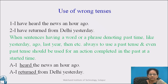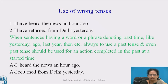We all know that there are three tense forms: simple present, simple past, and simple future. While using these tenses, we commit some mistakes by using wrong tenses. See the examples: 'I have heard the news an hour ago.' And 'I have returned from Delhi yesterday.' It is a rule: when sentences contain a word or phrase denoting past time — like yesterday, ago, last year, then, etc. — always use past tense. Past tense should also be used for an action completed in the past at a stated time. That's why the correct forms are: 'I heard the news an hour ago.' And 'I returned from Delhi yesterday.'